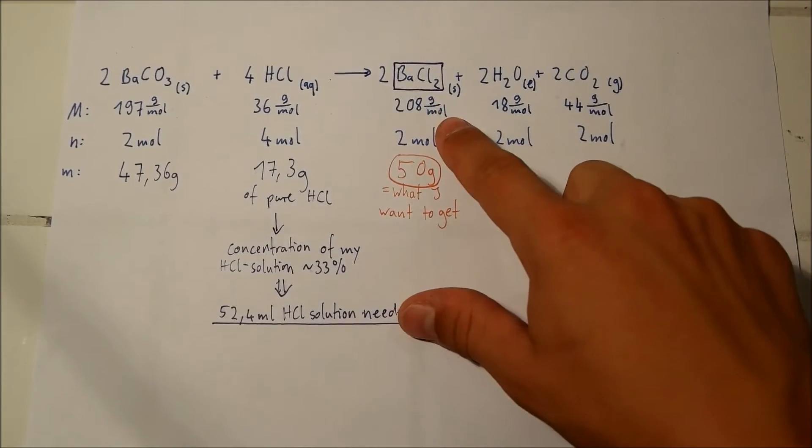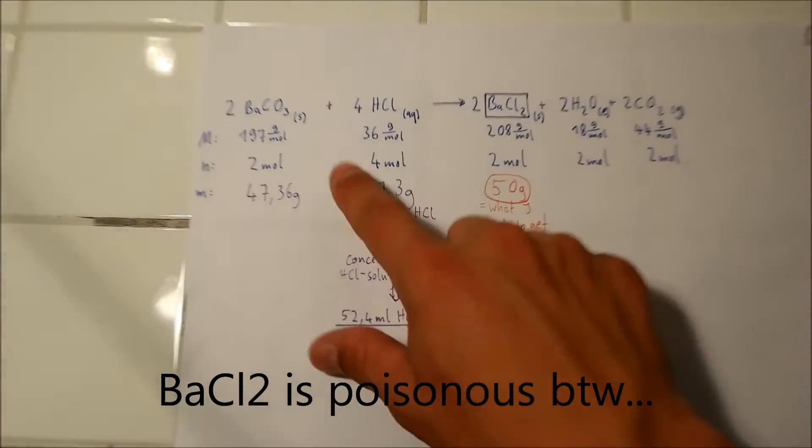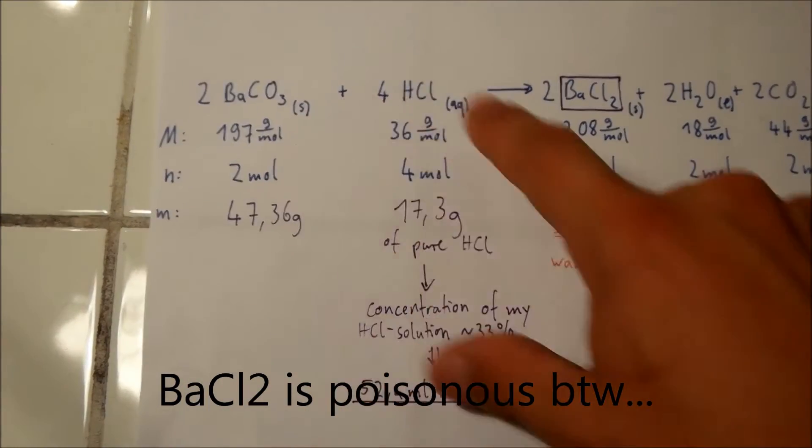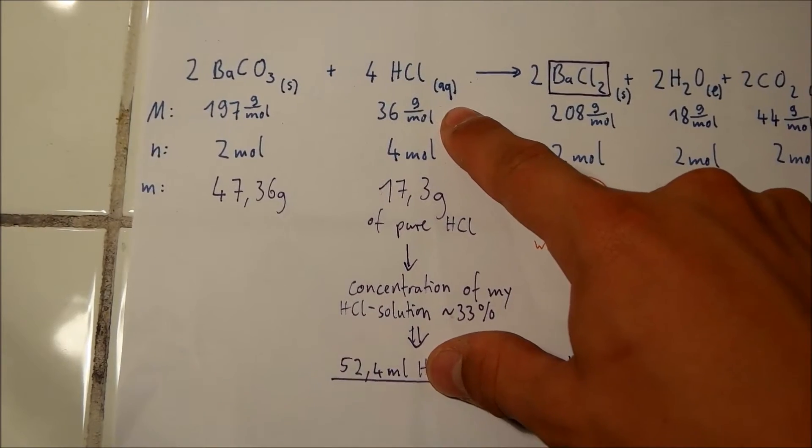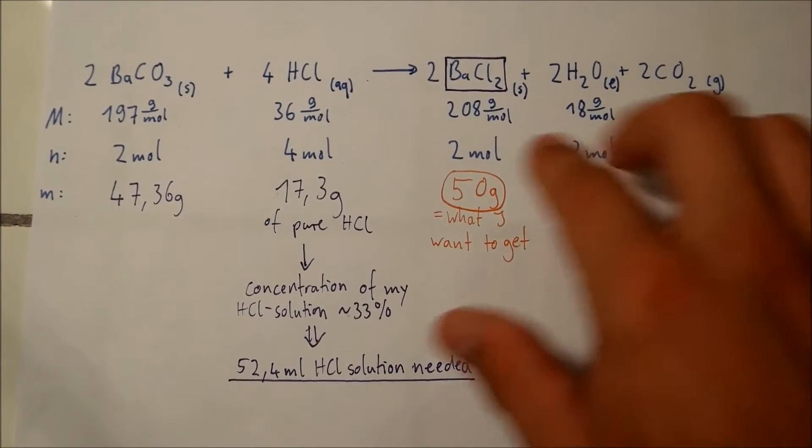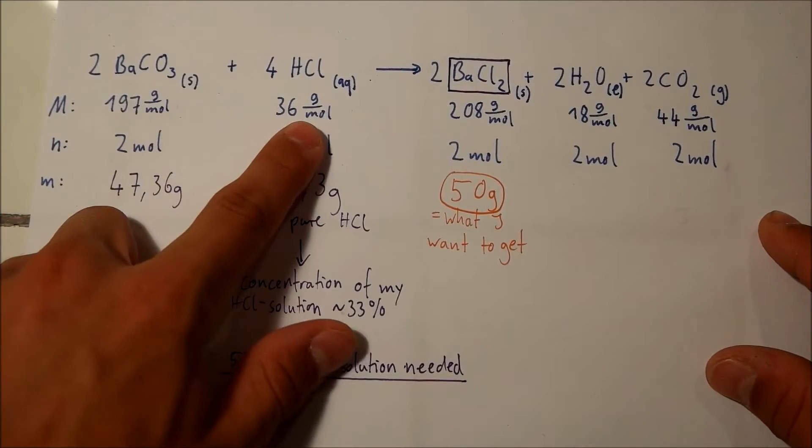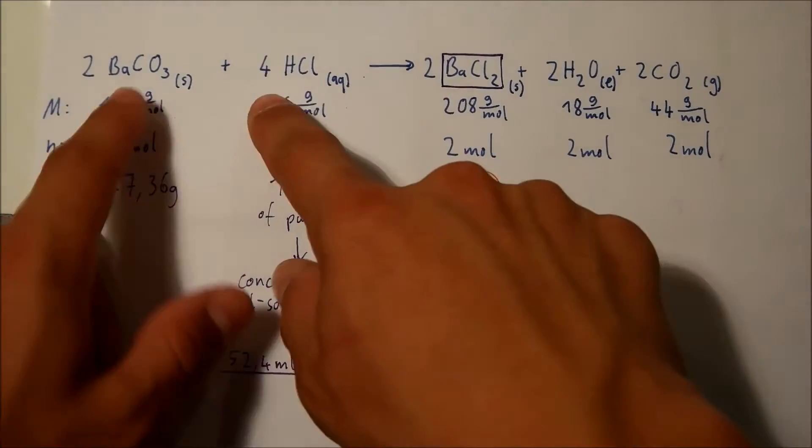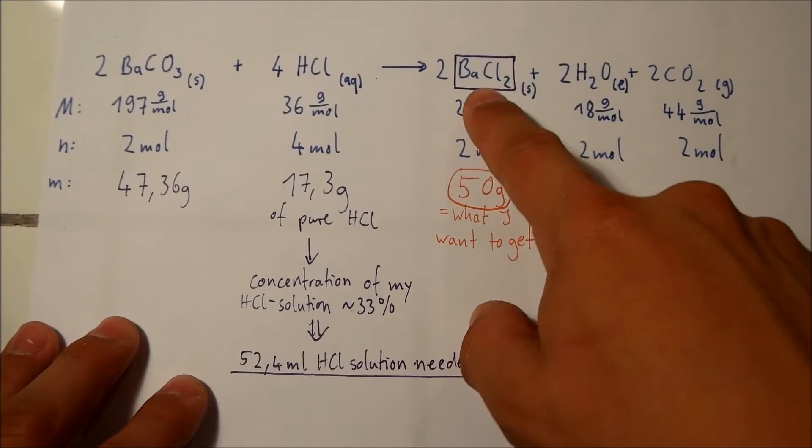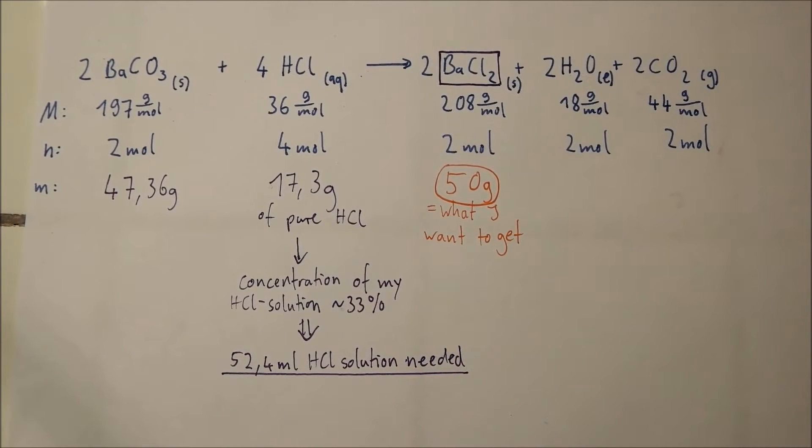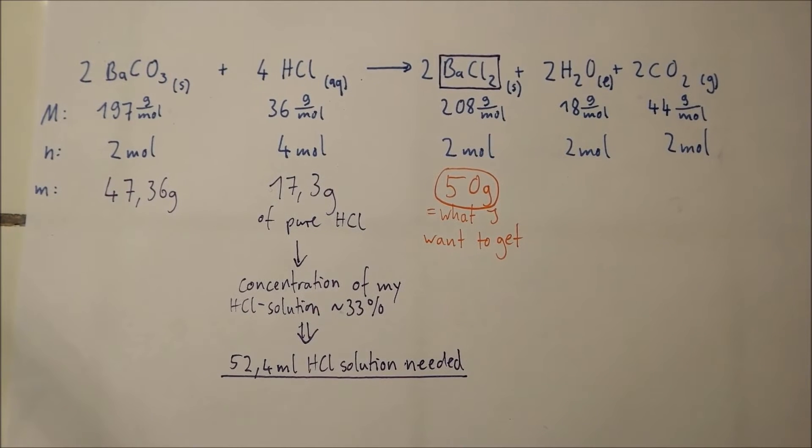Today I'll show you how to make barium chloride by reaction of barium carbonate and hydrochloric acid. This reaction is a pretty easy one. It's just reacting a salt with an acid and the ions kind of change. You learn this kind of reaction when you start with chemistry in your first year at school or something.